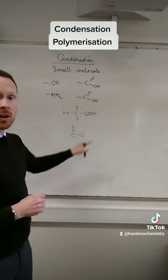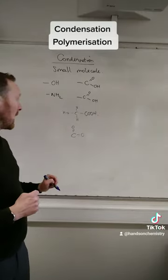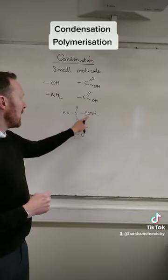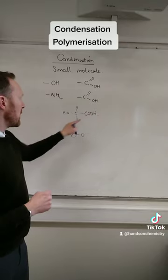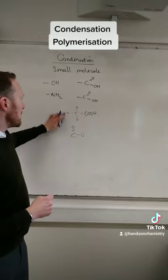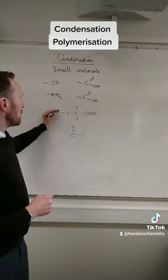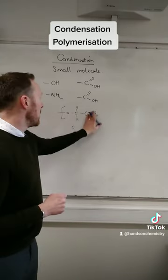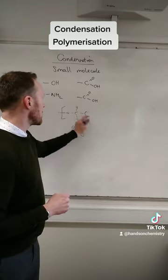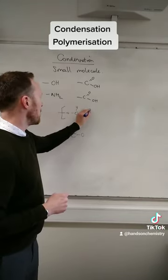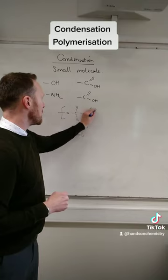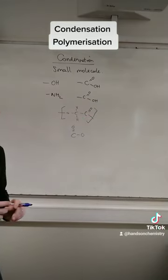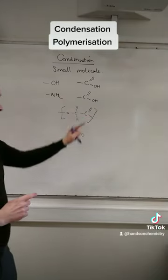So in this, what happens is that that hydrogen comes off, and that will be part of one end of the monomer. And then this double bond O there — that is the other part of the monomer. So you've got those two parts.